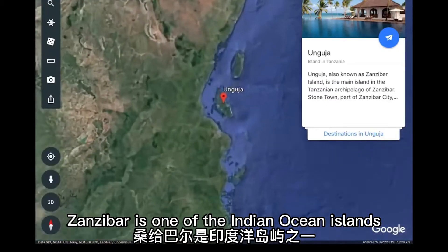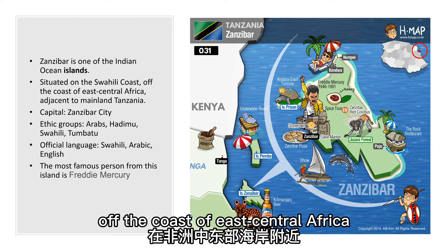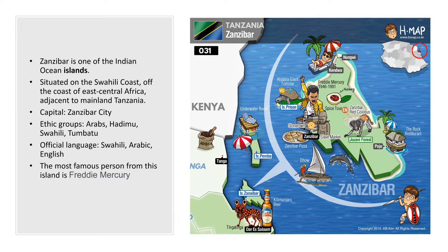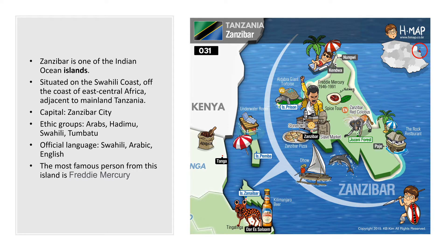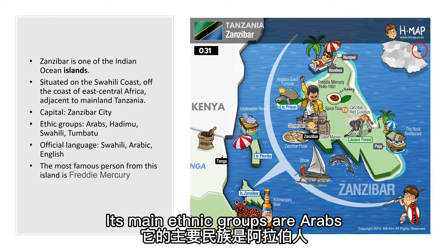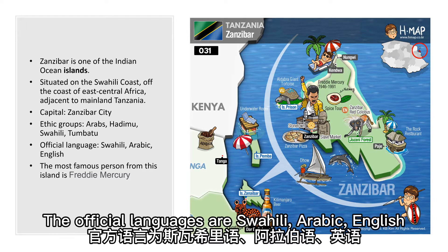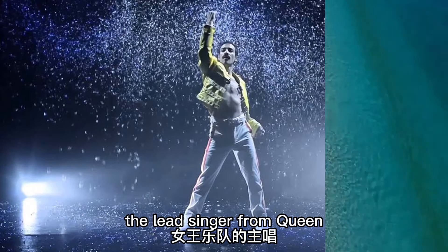Zanzibar's geography and tourism background: Zanzibar is one of the Indian Ocean islands. It is situated on the Swahili coast, off the coast of East Central Africa, adjacent to mainland Tanzania, consisting of many small islands and two large ones. It's a partly self-governing state in Tanzania. The capital is Zanzibar City. Its main ethnic groups are Arabs, Hadimu, Swahili, and Tumbatu. The official languages are Swahili, Arabic, and English. Zanzibar's most famous person is Freddie Mercury, the lead singer from Queen.